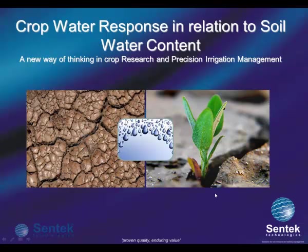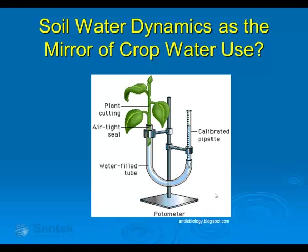Today I'd like to introduce you to a new way of thinking in crop research and precision irrigation management. Can we use a plant as a sensor to signal the water status? I'll look at the soil really as a bank for water, with the plant being the customer that does daily withdrawals of water. We can use a plant to show us the drinking speed as it's affected by different climatic conditions, growth stages and other factors.